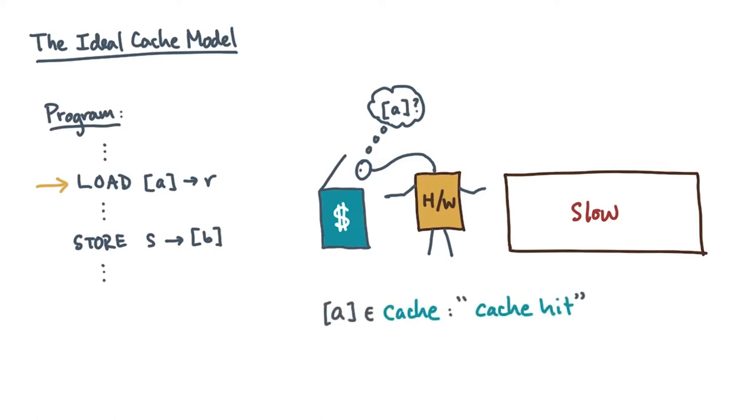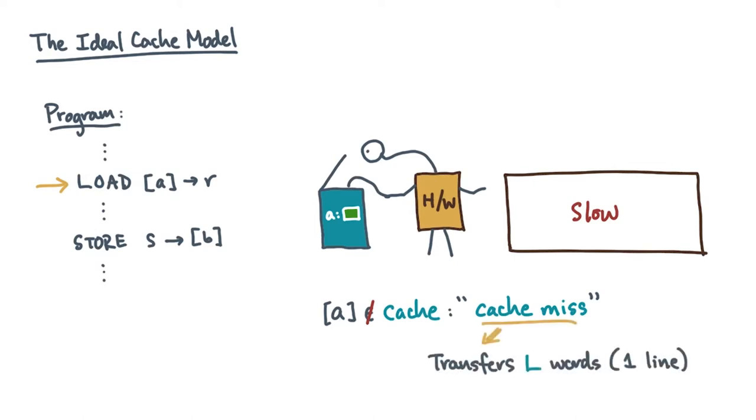If the value we want is not in cache, then it's a cache miss. In this case, the hardware grabs the value from slow memory, but also stashes a copy in the cache. Keep in mind that the hardware has to transfer an entire cache line. Now, which L consecutive words around the address A get transferred depends on how A is aligned.